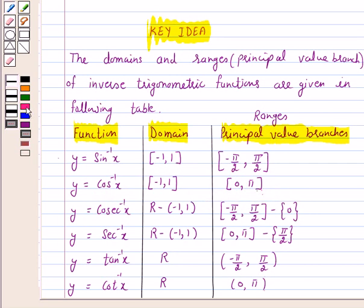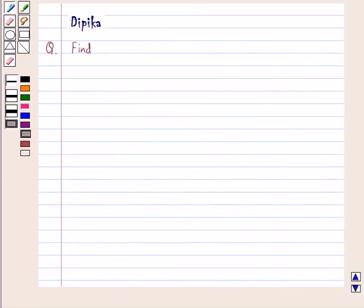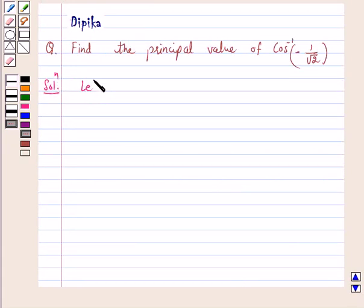Let cos inverse minus 1 over root 2 equal y. Then cos y equals minus 1 over root 2, and this is equal to minus cos pi by 4.